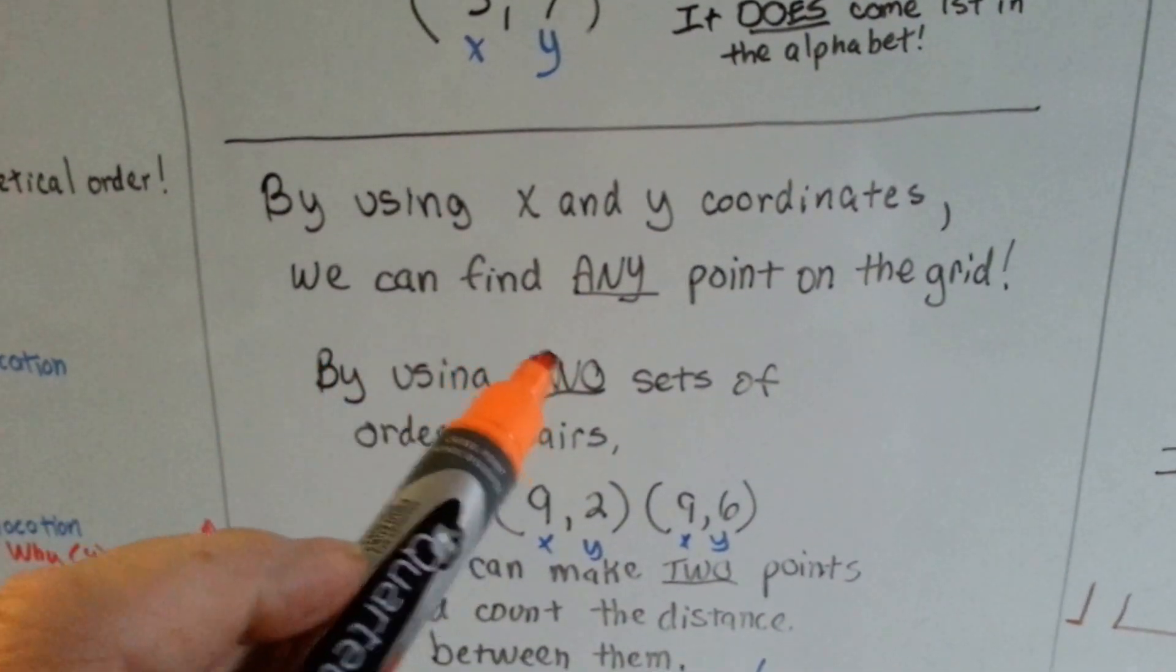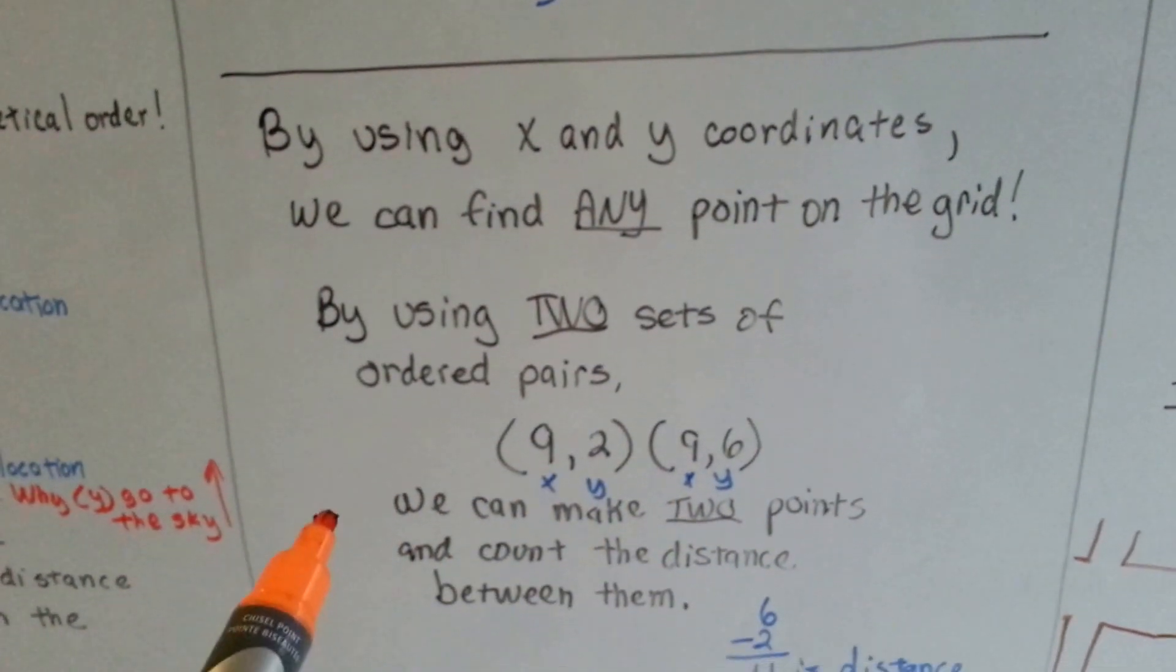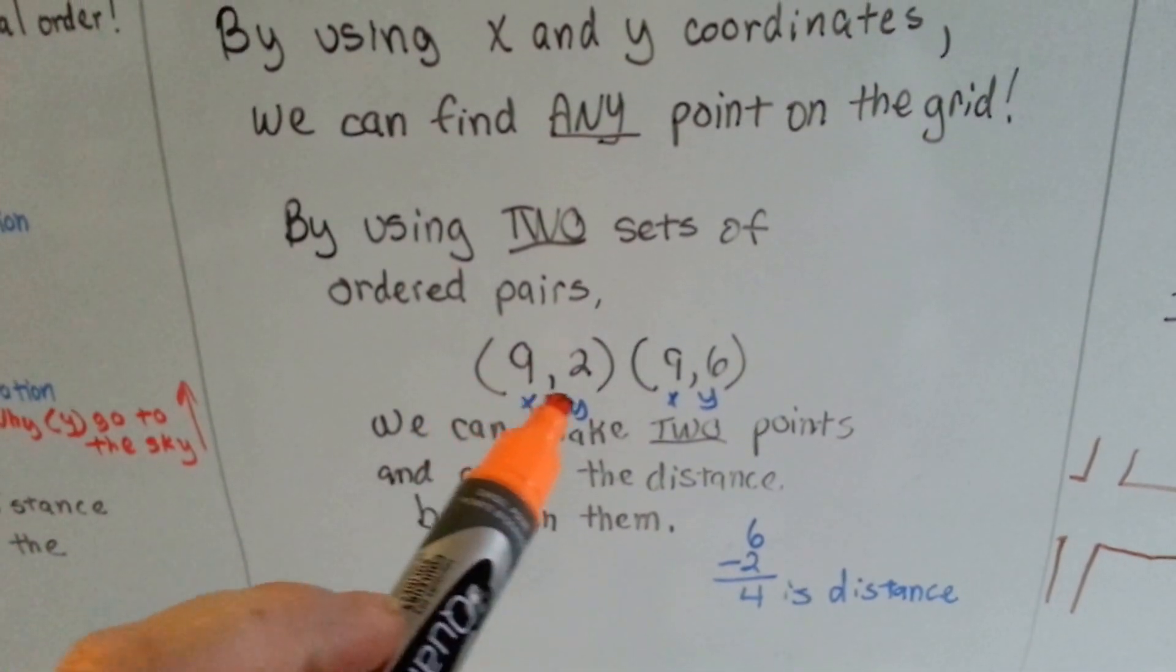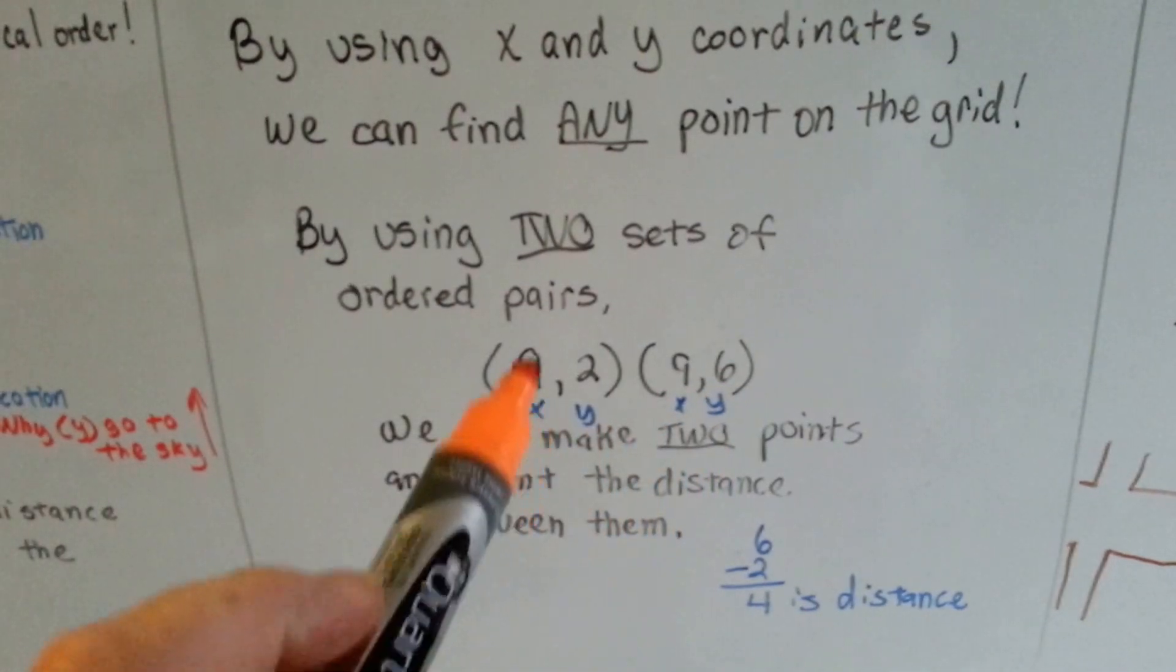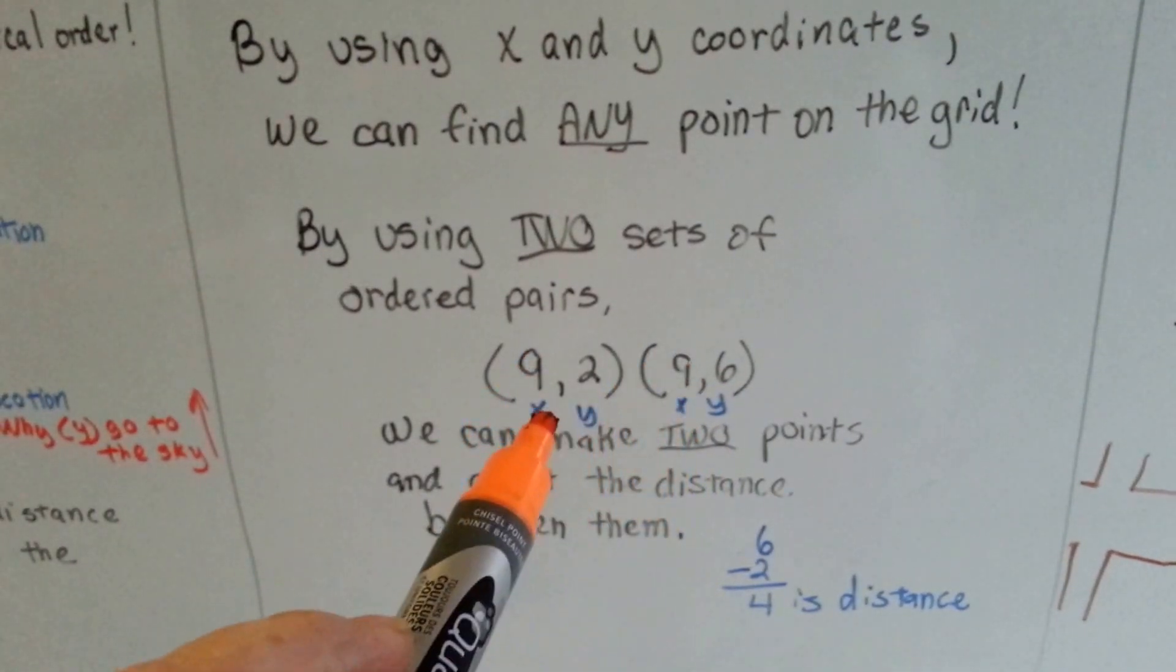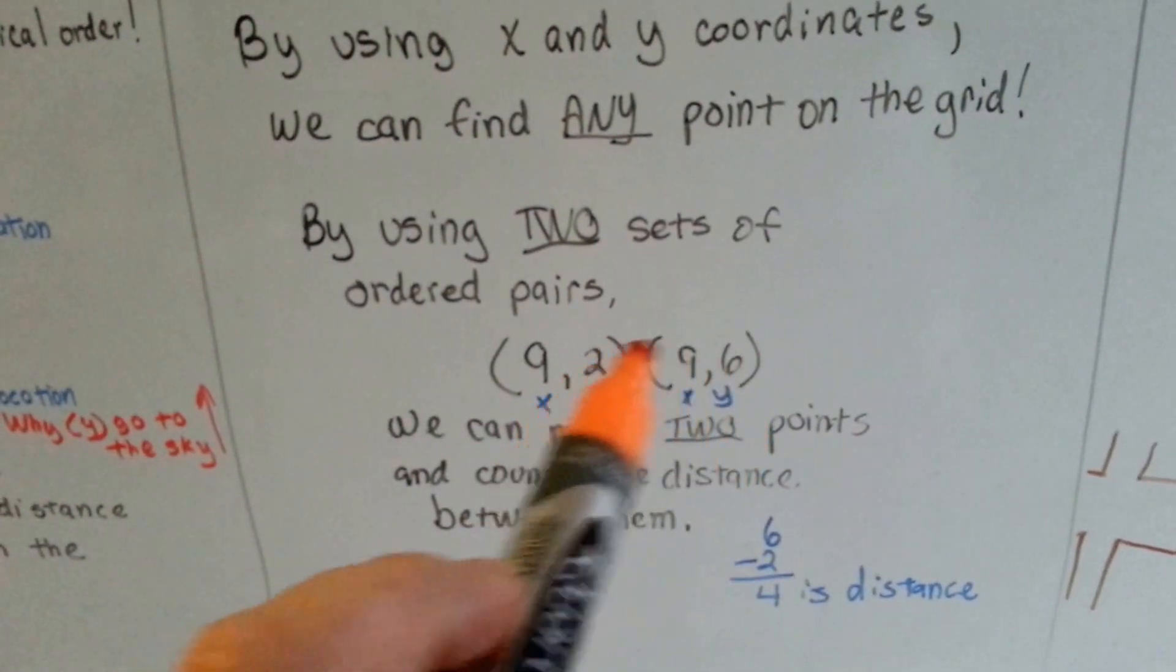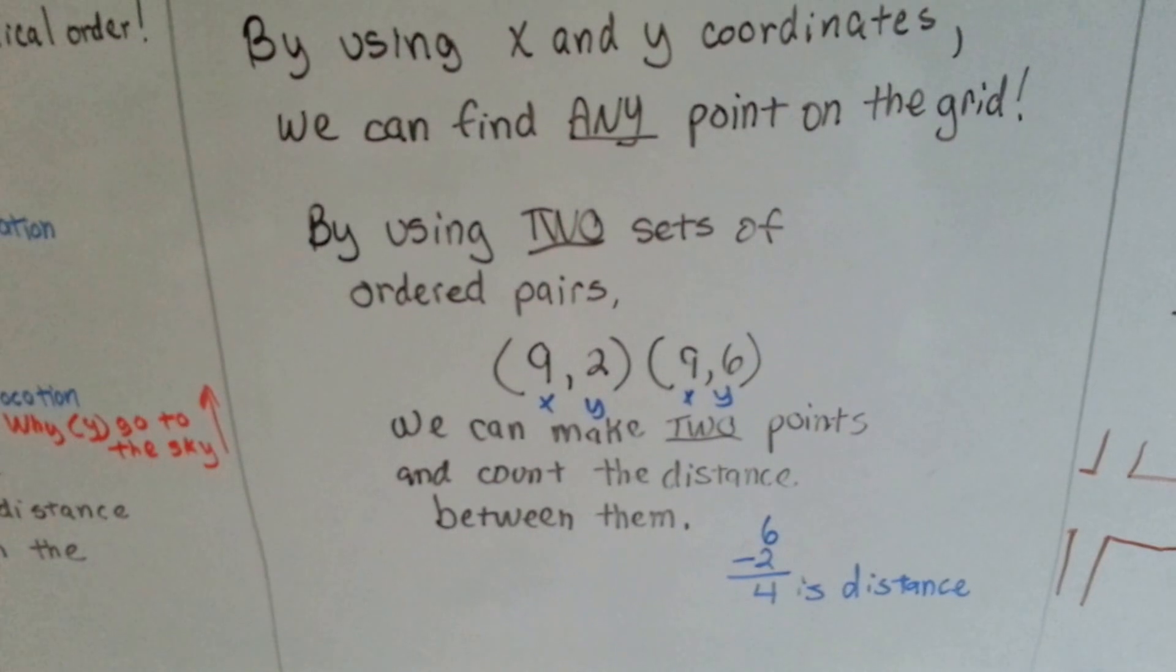By using two sets of ordered pairs, we can make two points and count the distance between them. If x is 9 and y is 2, and on the other point x is 9 and y is 6, we can see we're on the same place with x. But the y is 2 and 6, they're 4 apart from each other by doing some simple subtraction.